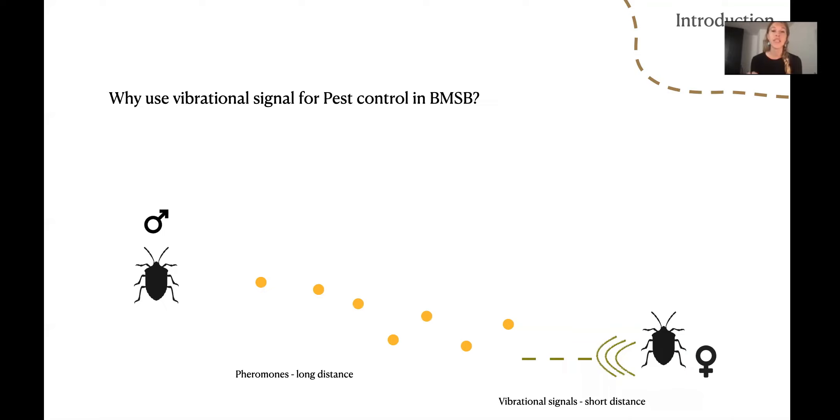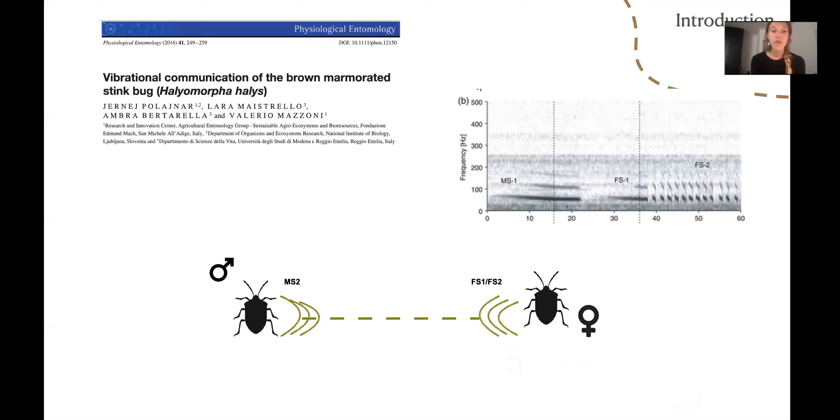But why is it of interest to use vibrational signals for pest control in these species? Well, to start, for Halyomorpha halys, long range mating communication is mediated by pheromones, whereas vibrational signals mediate the behavior interactions at short distances. Therefore, the use of vibrational signals for mate location is something applied in these species.